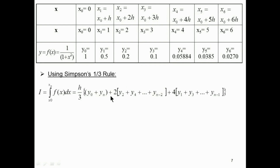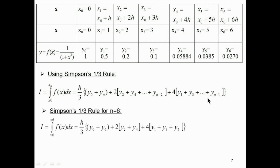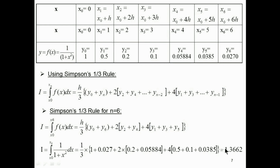We have Simpson's 1/3 rule for n number of strips. For n = 6, it is written as: I = (h/3) × [y0 + y6 + 2 × (summation of even terms of y) + 4 × (summation of odd terms of y)]. By substituting all respective values of y, the answer using Simpson's 1/3 rule is 1.3662.